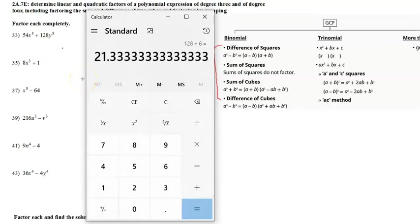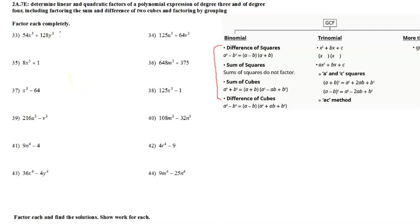Let's just take out a 2 for now. So we have 2(27x³ + 64y³). Notice there are no other numbers you can take out of there because 27 and 64 are relatively prime numbers, and x and y are not necessarily the same, so you can't factor those out either.